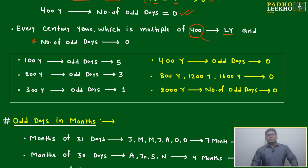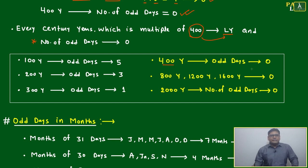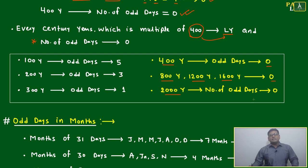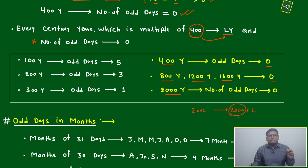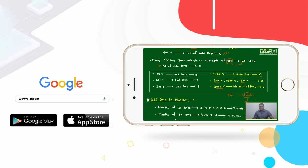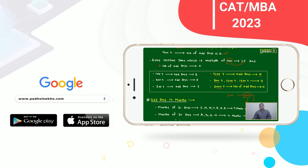For example, 2000 years has 0 odd days. Now suppose you want to calculate a day in 2002. Break it as 2000 years (0 odd days) plus 2 remaining years. First find the nearest multiple of 400 — that gives zero — and then calculate only the remaining years. Next, break it further down to the month level.